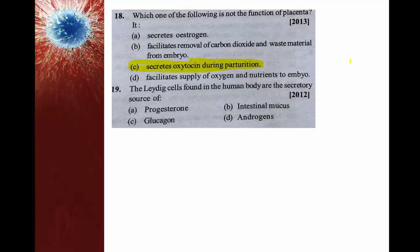The Leydig cells found in the human body are the secretory source of what? Leydig cells are present only in the testis and are also called interstitial cells. Their function is to secrete male sex hormones called androgens, the major one being testosterone. Androgens are responsible for secondary sexual characters in males and also control spermatogenesis.